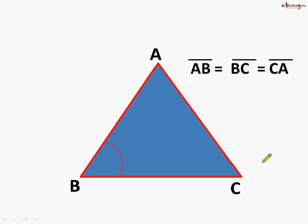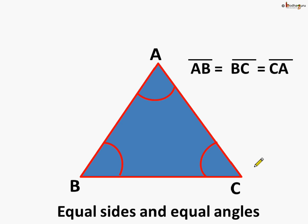Not only this — if we measure the angles, angle B, angle C, and angle A, you will find that not only the sides, but all three angles are also equal. So we can say in an equilateral triangle, all the sides and all the angles are equal.